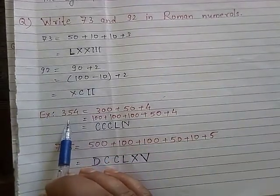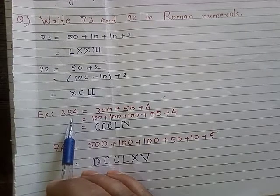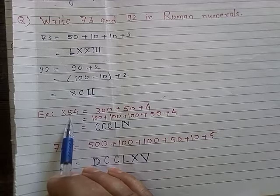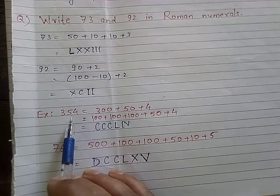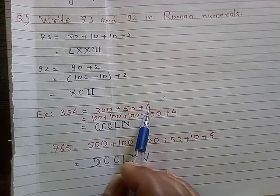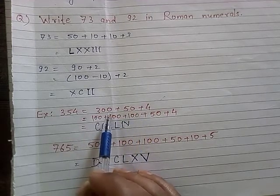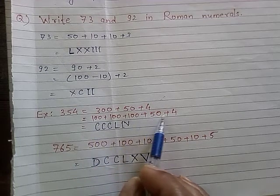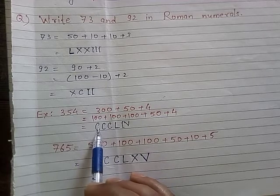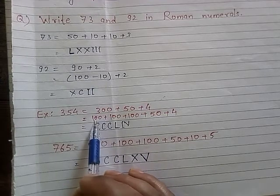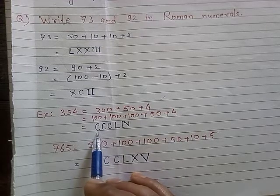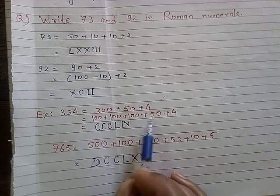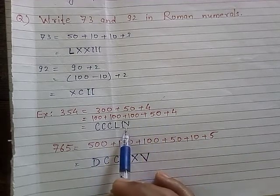What is the Roman numeral for 354? We break it down as 300 plus 50 plus 4, which is 100 plus 100 plus 100 plus 50 plus 4. C is used for 100, so we write CCC for 300. L stands for 50. And 4 is written as IV. So 354 is CCCLIV.